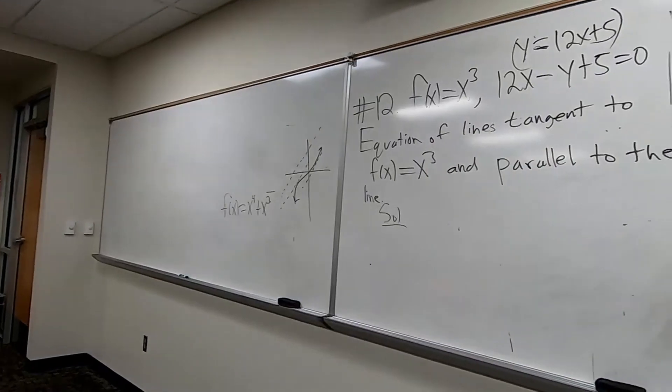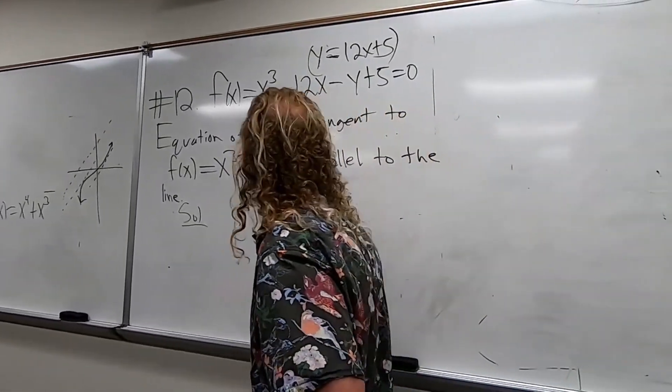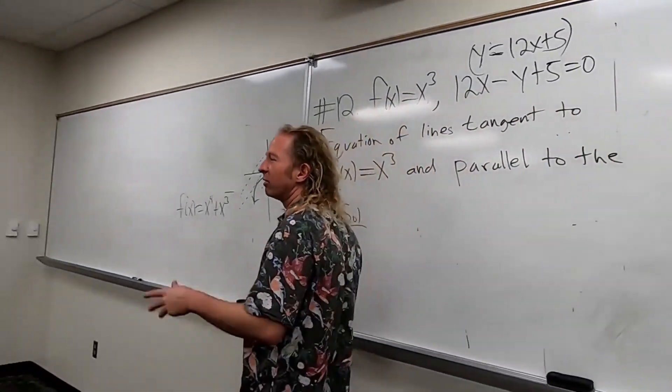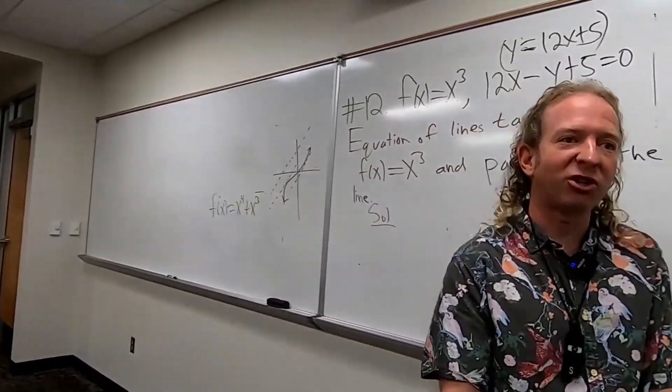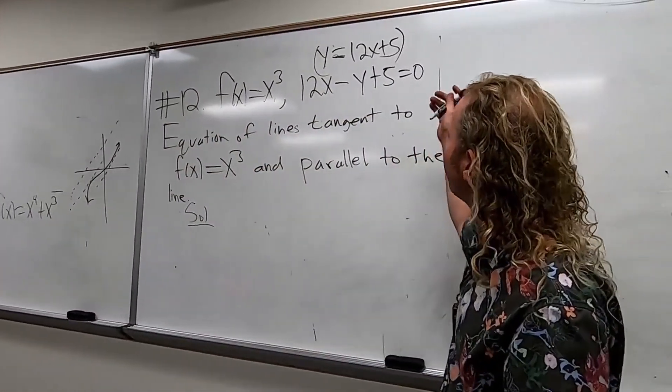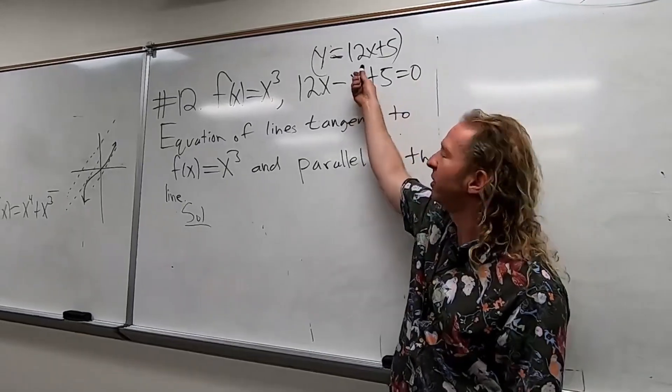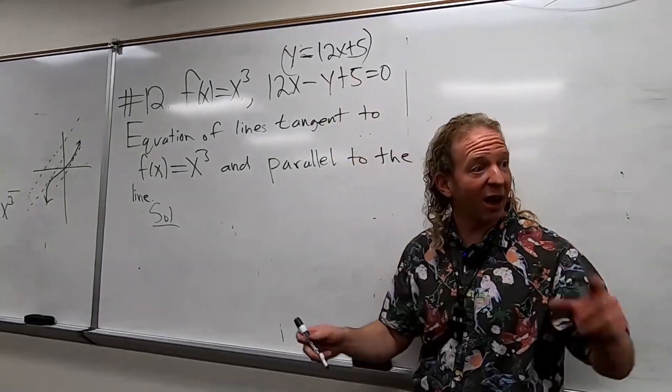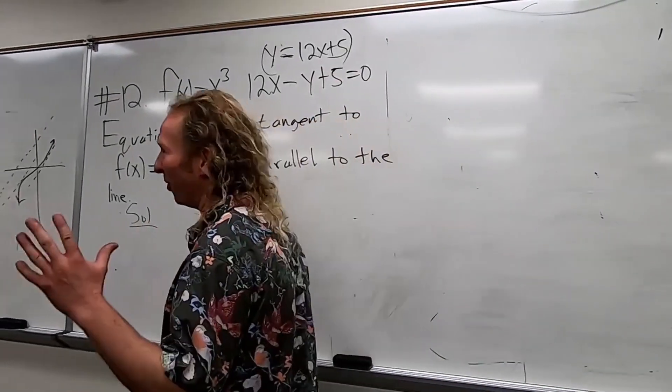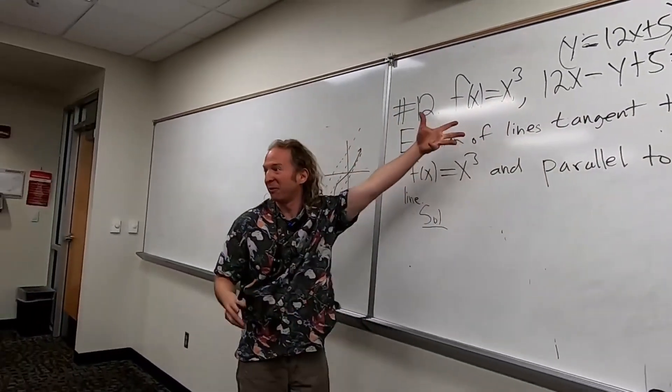So what do we know about parallel lines? They have the same what? Do you remember? Same slope. Yeah, so parallel lines have the same slope. So we start with that. So what is the slope of this line up here? 12. 12. Yeah, very good. So, oh, it's already really cool. Like, this is a great problem. So the slope of this line is 12, right?